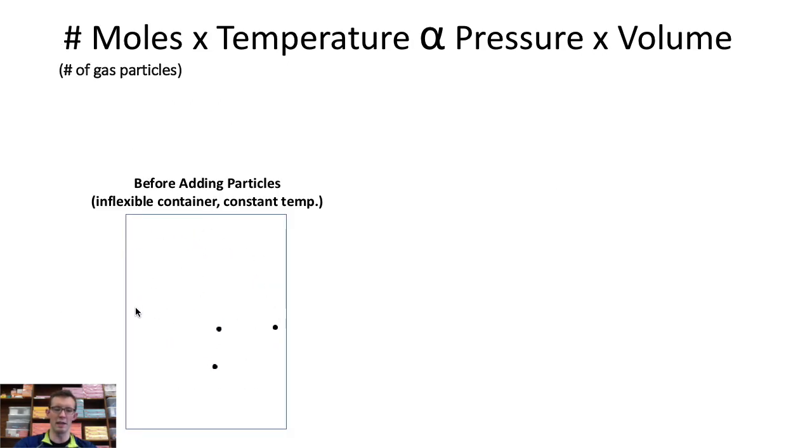So for instance, if we had gas contained in an inflexible container, that is, its volume stays constant, it can't change, and we were to keep the temperature constant, but we were to double the number of moles in the container.